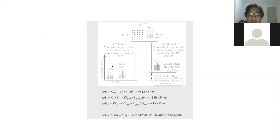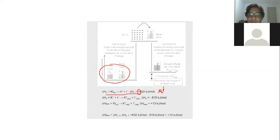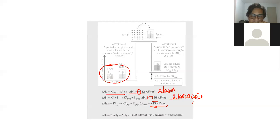Olha aqui um exemplo. Durante a mistura entre água e iodeto de potássio, teve duas fases. Na primeira fase eu tenho entalpia positiva, ou seja, absorção de calor. Na segunda parte da mistura eu tenho entalpia negativa, ou seja, liberação de calor. A dissolução final é o saldo dos dois. Somando os dois, dá uma diferença de mais 13 quilojoules por mol. Se a diferença é positiva, então essa dissolução é endotérmica. Ela absorveu calor no saldo final.